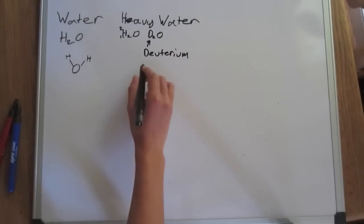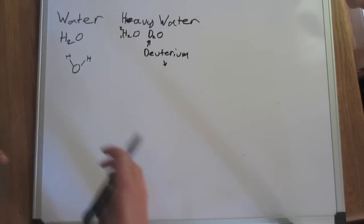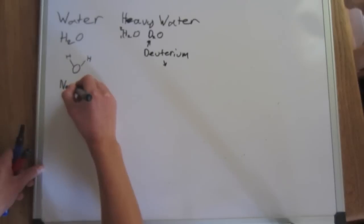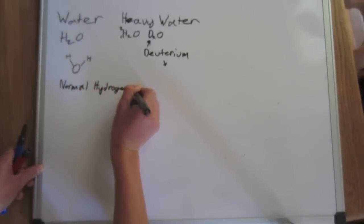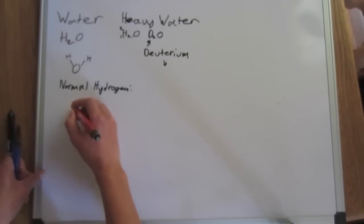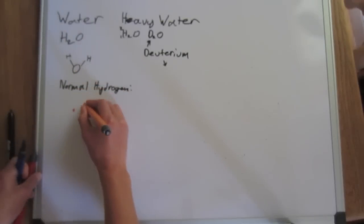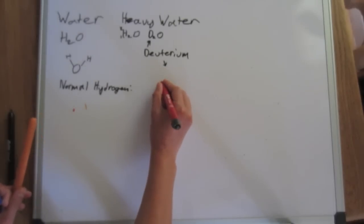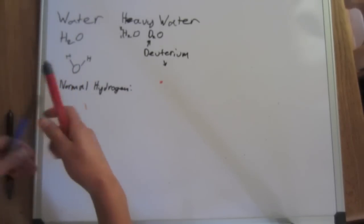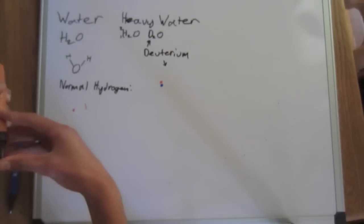And deuterium is hydrogen, except normal hydrogen has a proton in the nucleus and an electron. And deuterium has a proton in the nucleus, and it also has a neutron in the nucleus, and of course it has an electron.